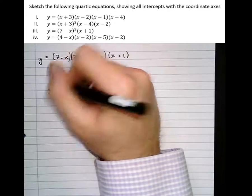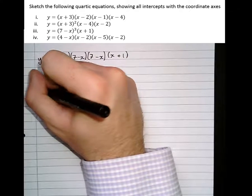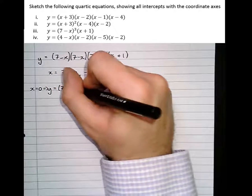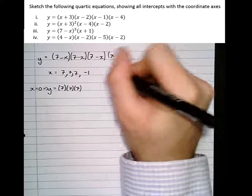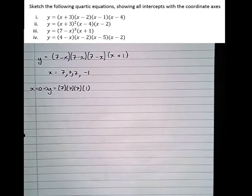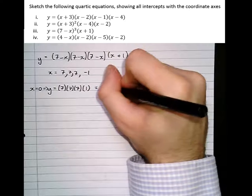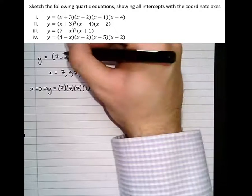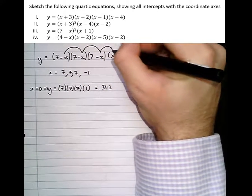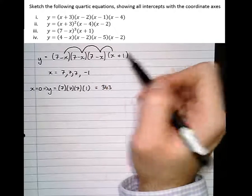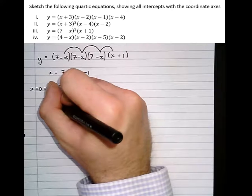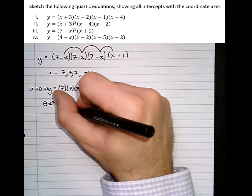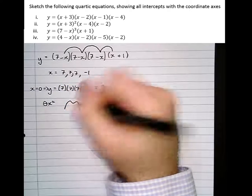The y-intercept is when x equals 0. So when x equals 0, y equals (7 - 0)(7 - 0)(7 - 0)(0 + 1) equals 343. And then timesing all the x's together to decide whether it's a positive or negative quartic: minus x times minus x times minus x times x is minus x to the 4. So actually this one is going to be an upside down quartic, a negative quartic. Start at the bottom left and ending at the bottom right.